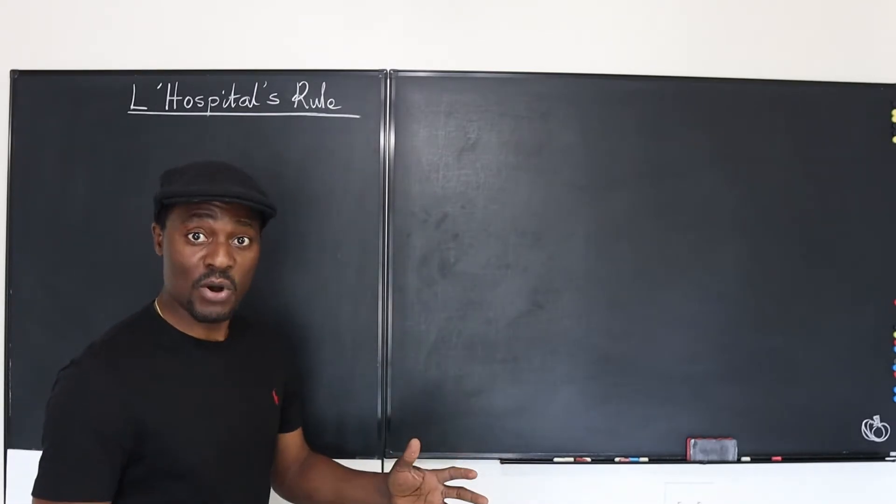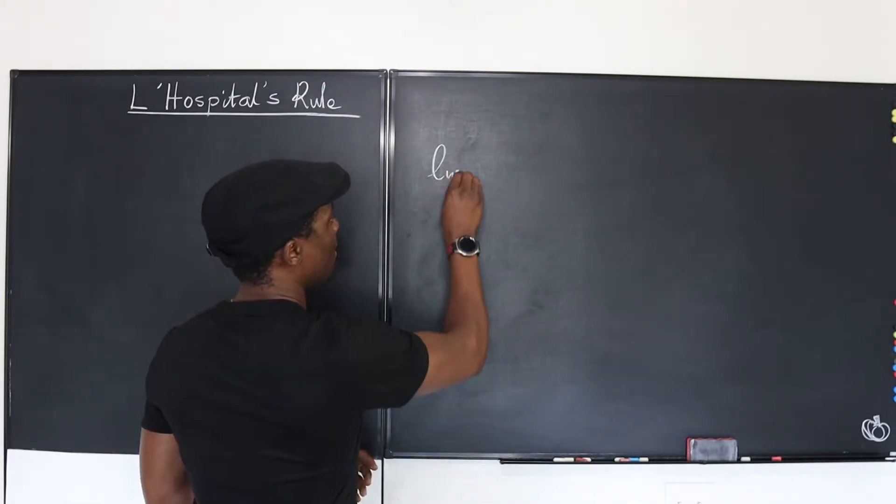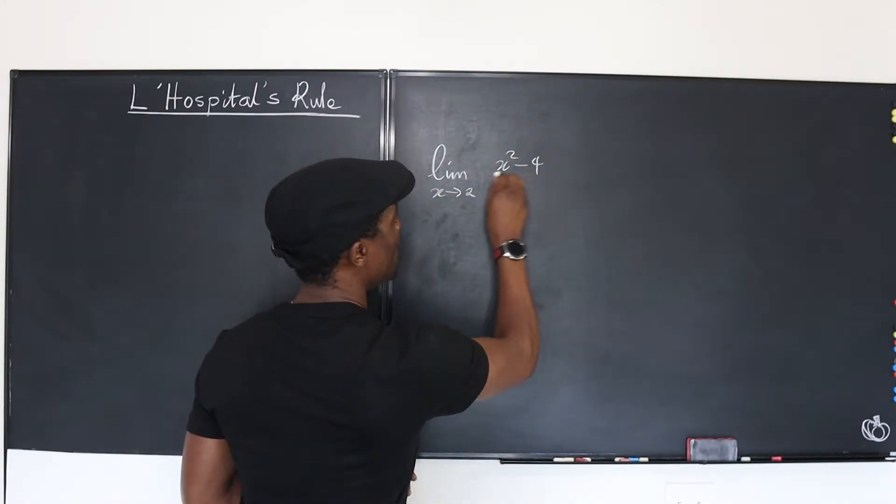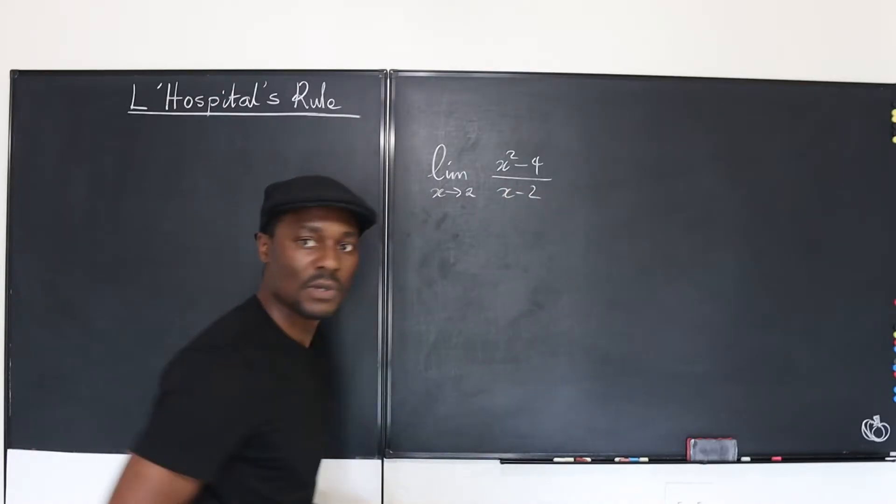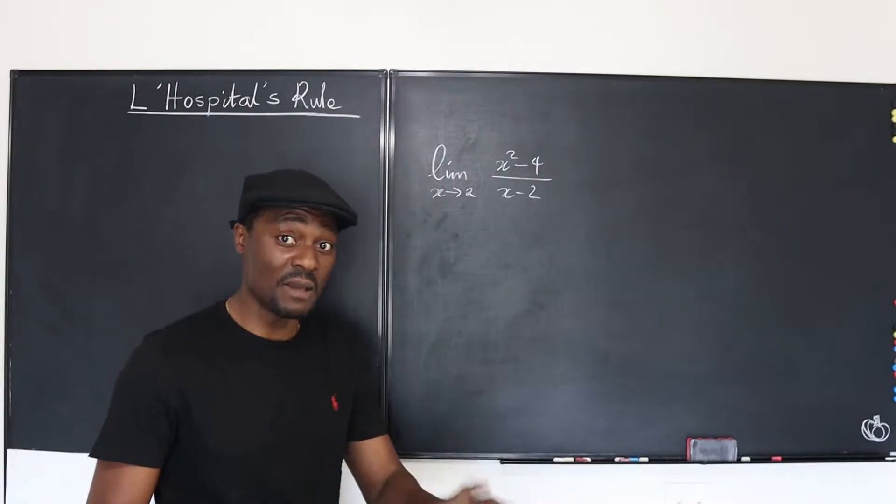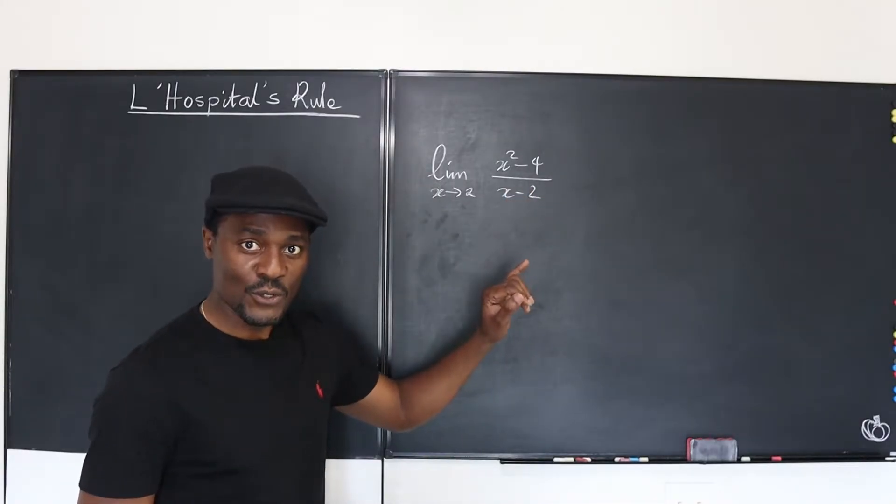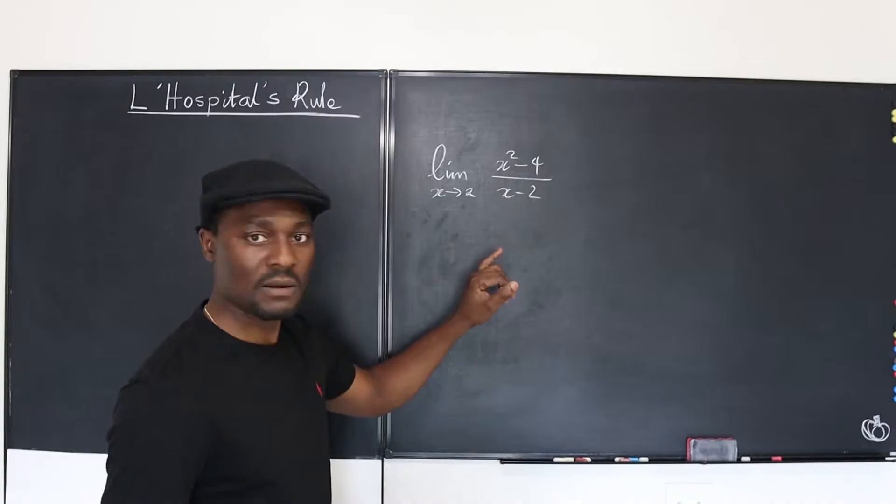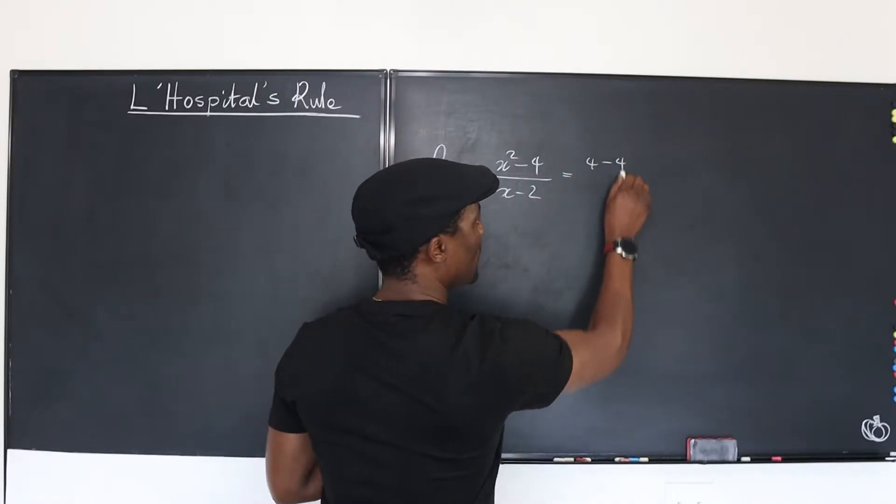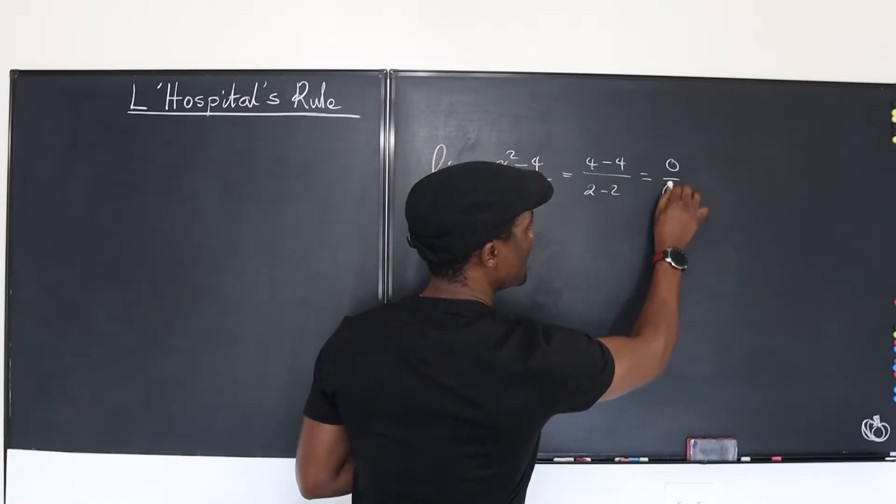It says if you ever get a problem like this, let's say you take the limit as x goes to 2 of x squared minus 4 over x minus 2. You are asked to take this limit. Remember that your first attempt at any limit problem is to do direct substitution. So I'm going to take 2 and plug it in here. So what is 2 squared? It's 4. So that's going to give me 4 minus 4, and that gives me 0. And this is going to be 2 minus 2. So I got the answer 0 over 0.